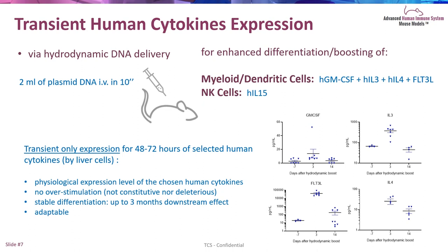Humanized mice have a full reconstitution of all immune cell populations. However, one drawback is that myeloid dendritic cells and even NK cells are poorly reconstituted in those animals. The strategy we have developed is based on a technique called hydrodynamic gene delivery. Using large volumes of saline solution containing plasmids coding for human growth factors, we can get a very transient, moderate-level expression of human cytokines. We have optimized different cocktails for myeloids, dendritic cells, and NK cells. The expression of cytokines lasts for a few days, then goes back to normal.